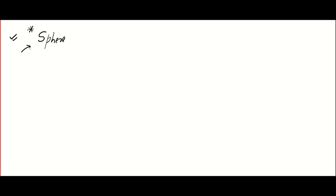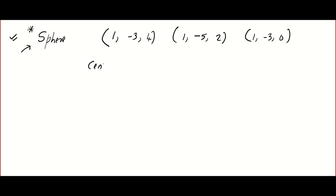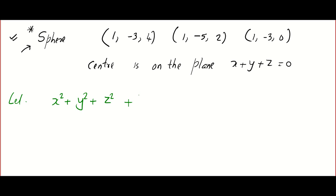The next type of problem — I saw this in some old question papers — asks you to find the equation of a sphere through given points. For example: find the equation of a sphere through the points (1, −3, 4), (1, −5, 2), (1, −3, 0), whose center lies on the plane x + y + z = 0. Whenever they ask such a question, assume the required sphere to be x² + y² + z² + 2ux + 2vy + 2wz + d = 0.